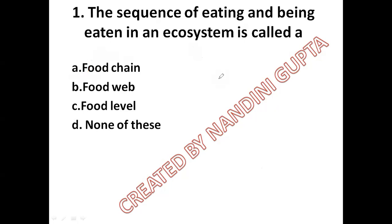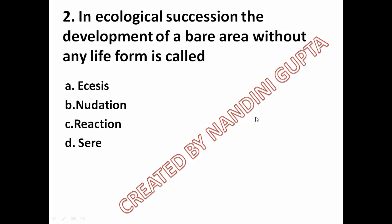The sequence of eating and being eaten is called food chain. Next question: in ecological succession, the development of a bare area without any life form is called option A Nudation, option B Mutation, option C Reaction, option D Searing.